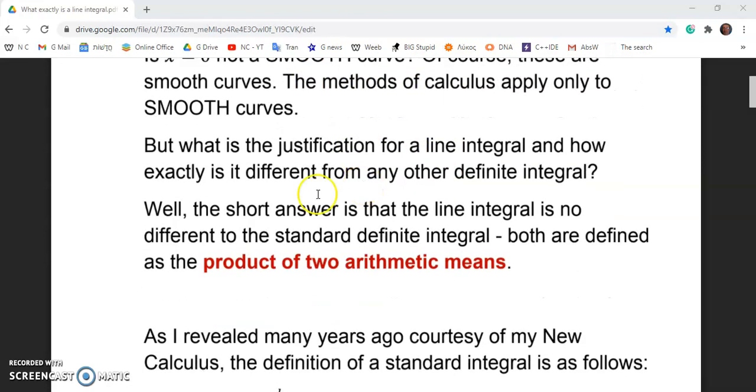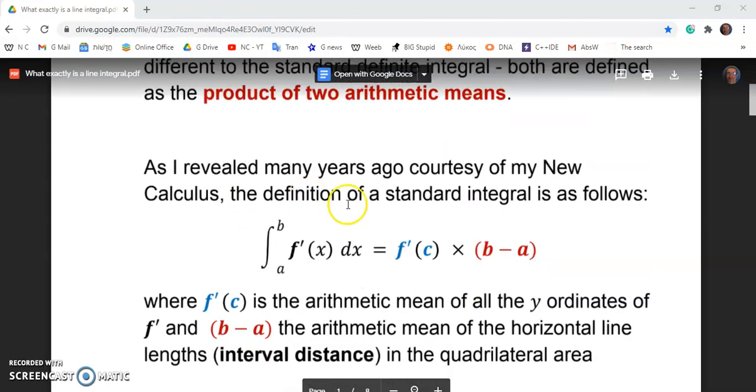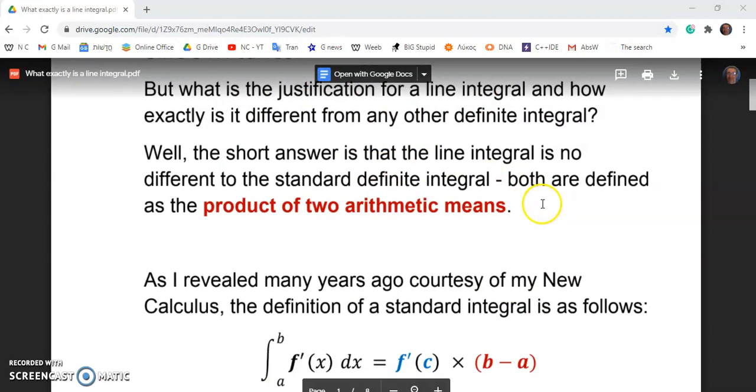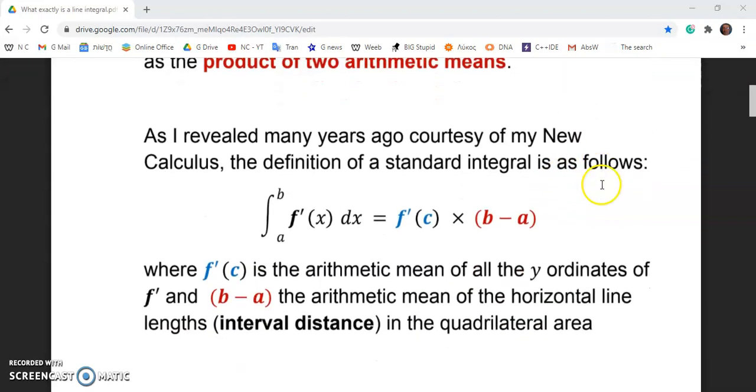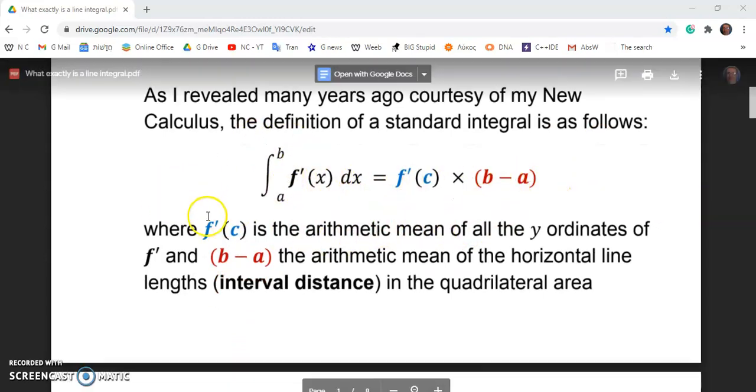So the methods of calculus apply only to smooth curves. But what is the justification for a line integral? And how exactly is it different from any other definite integral? The short answer is that it isn't different at all. And both are defined as the product of two arithmetic means,